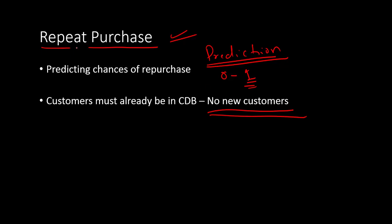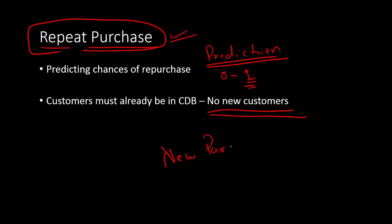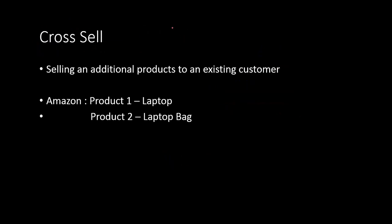This is done on existing customers, not new customers, because it's about repurchase, not new purchase. For new purchase, it's an open problem — there isn't any data, so you can't do much. But for repeat purchase, you already have data in your database, so you can do a lot of research on that.